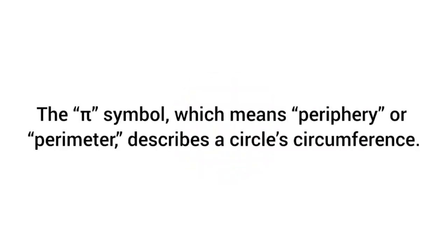The Pi symbol, which means periphery or perimeter, describes a circle circumference.